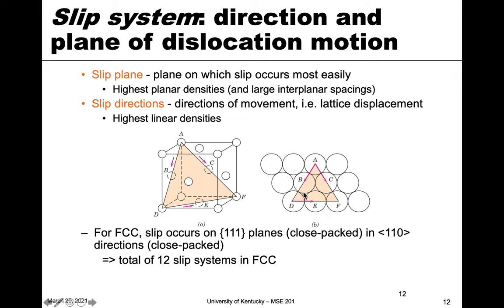For FCC, we could have any of the {111} type planes, because they're all equivalent. And the ⟨110⟩ directions are all equivalent as well. The possible combinations between those give us 12 different slip systems — 12 different combinations of plane and direction — meaning FCC has 12 possible slip systems for dislocation motion.